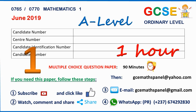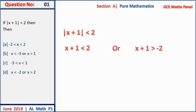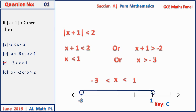We begin this paper. Question 1: absolute |x + 1| is strictly less than 2. This can be written as x + 1 < 2 or x + 1 > −2. Solving, we have x < 1 or x > −3, and the answer is C as shown on the number line.